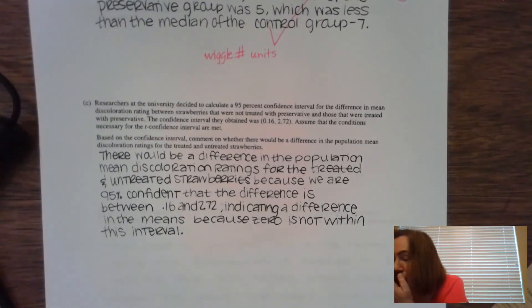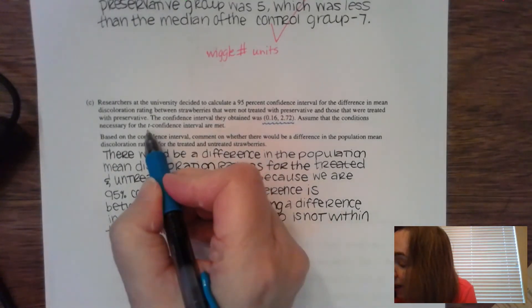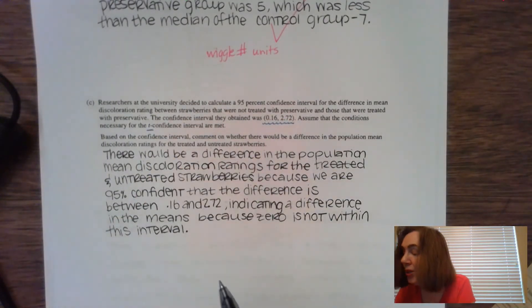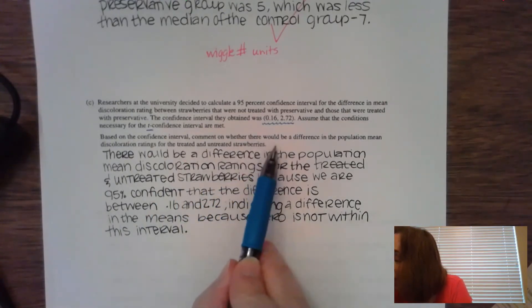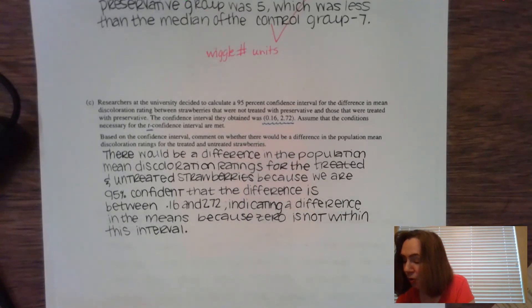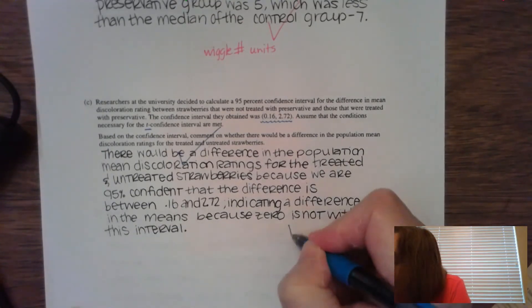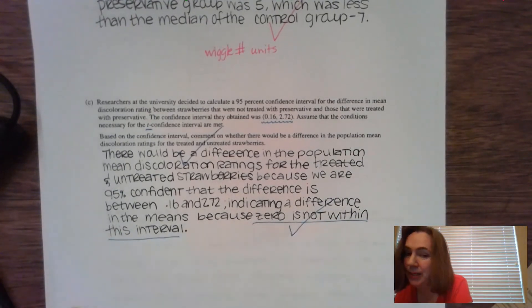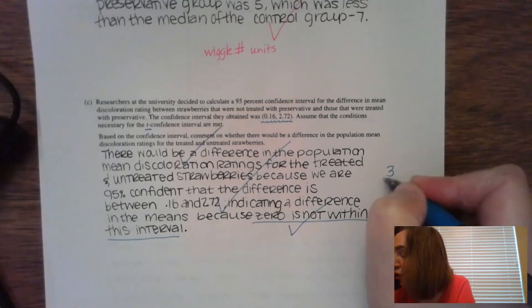The last part C is about researchers deciding to calculate a 95% confidence interval. And if you read through it, they actually tell you what the confidence interval is. So the confidence interval, they actually tell you, it was a one sample T confidence interval. So this is going to be, where's the mu? Where's the true population mean? So it says using that interval, comment on whether there would be a difference. So the first check is going to be yes, there would be a difference. So there needs to be an affirmative answer for that first check. How do you know that there is a difference? Well, read through and make sure, zero is not within the interval. That is going to be the next check. And then looking at your answer, do you have context there? Do you talk about strawberries? Do you talk about discoloration? If you have context, give yourself your third check.